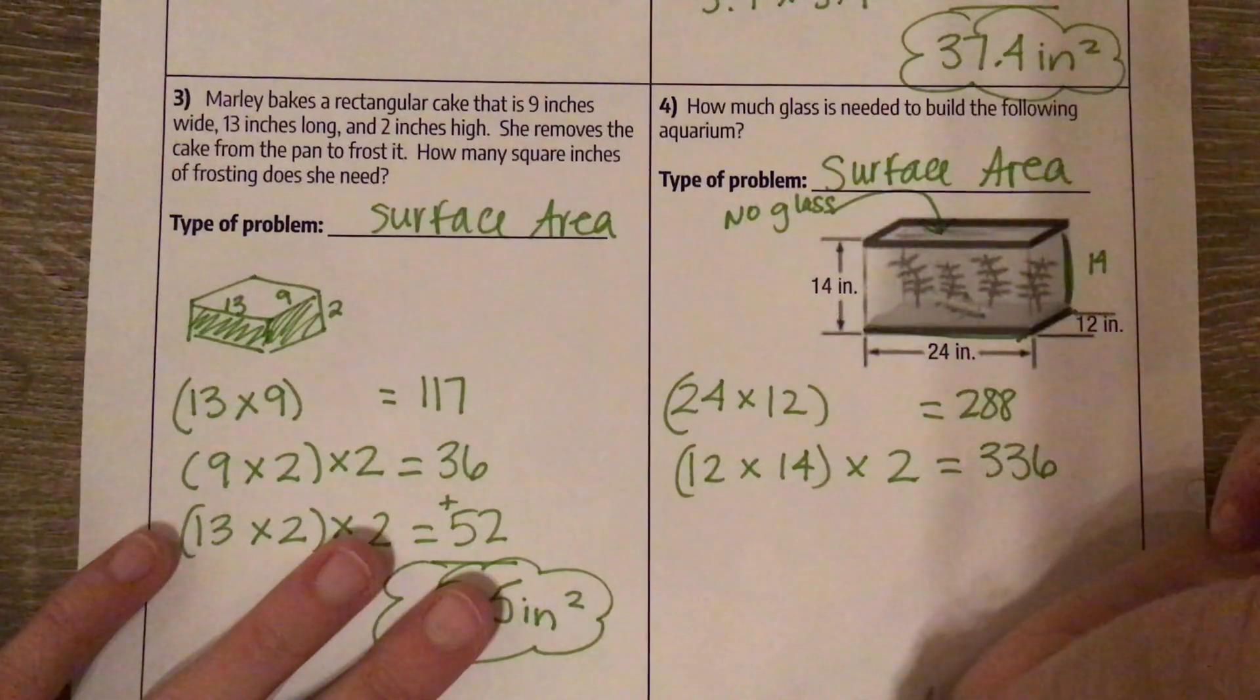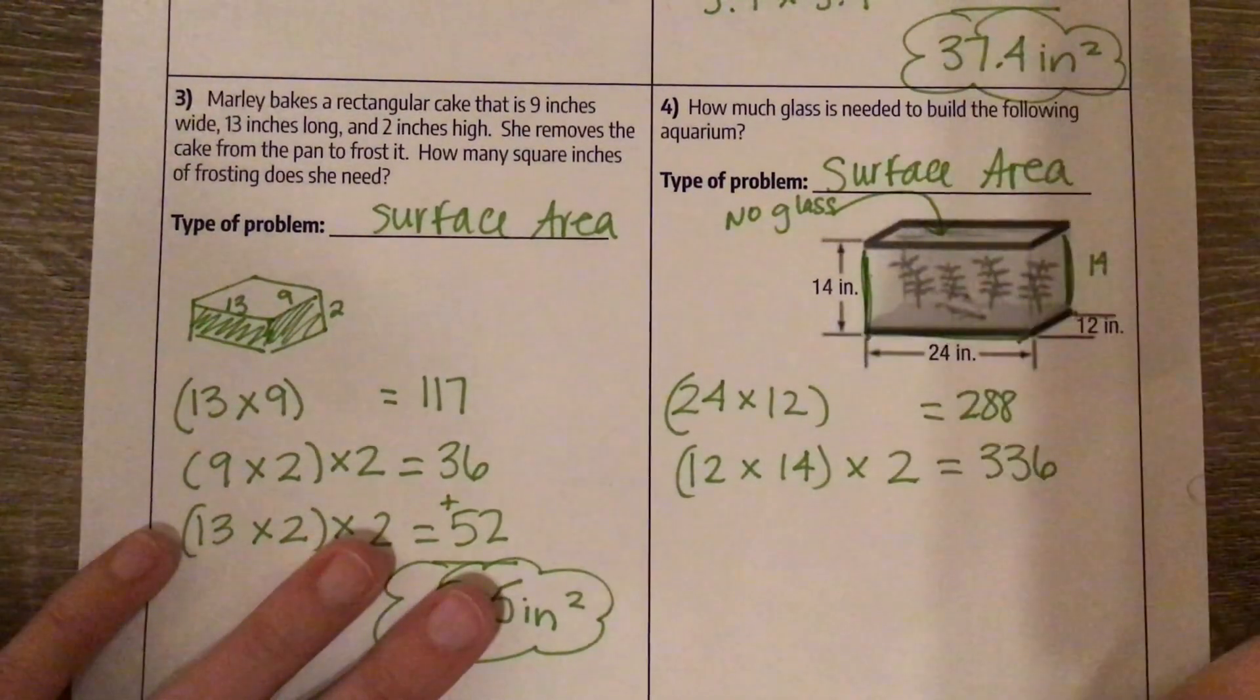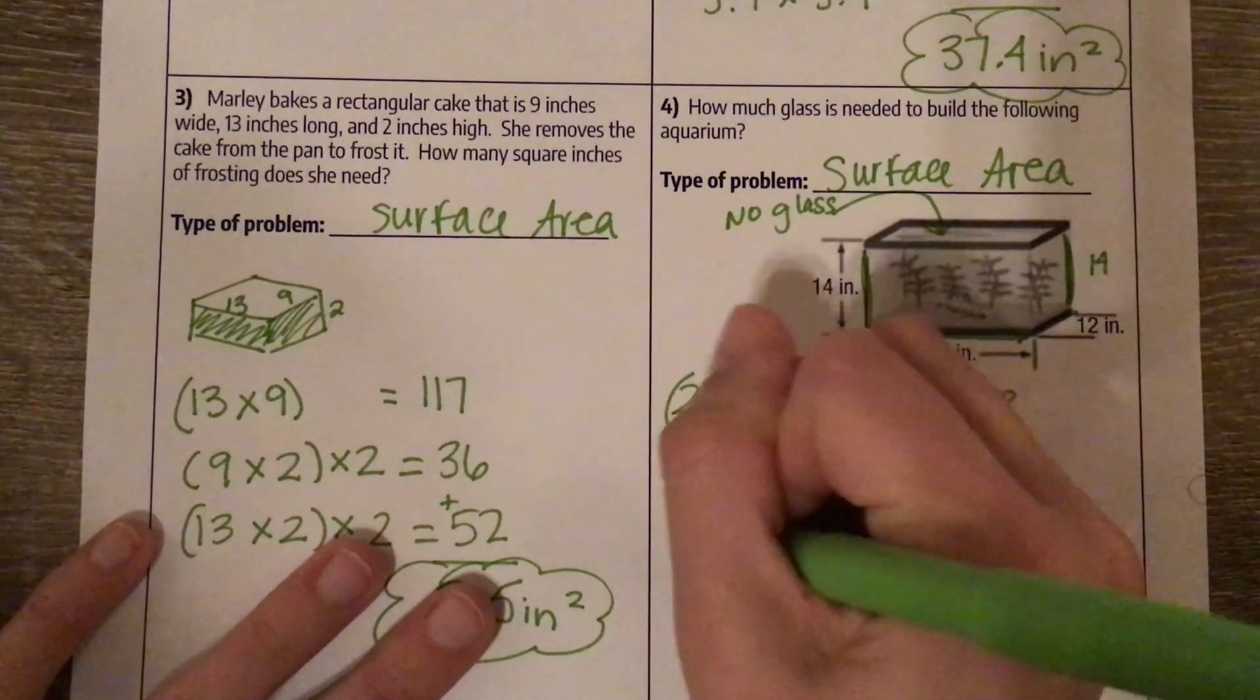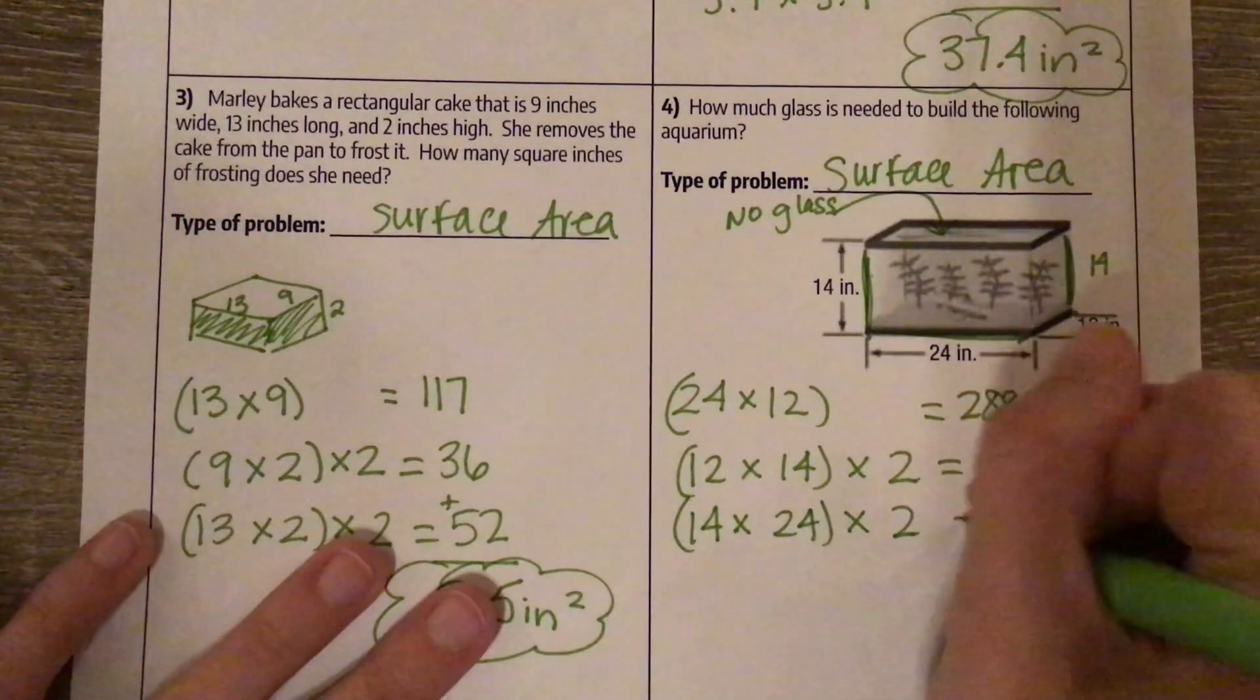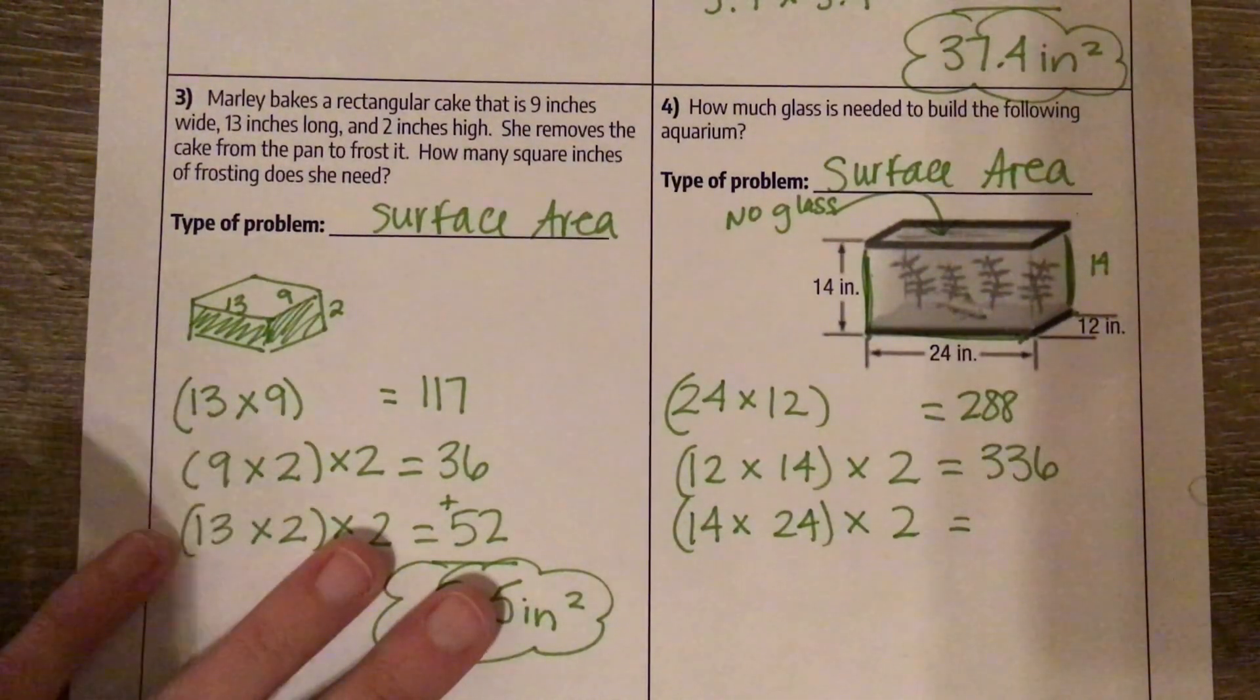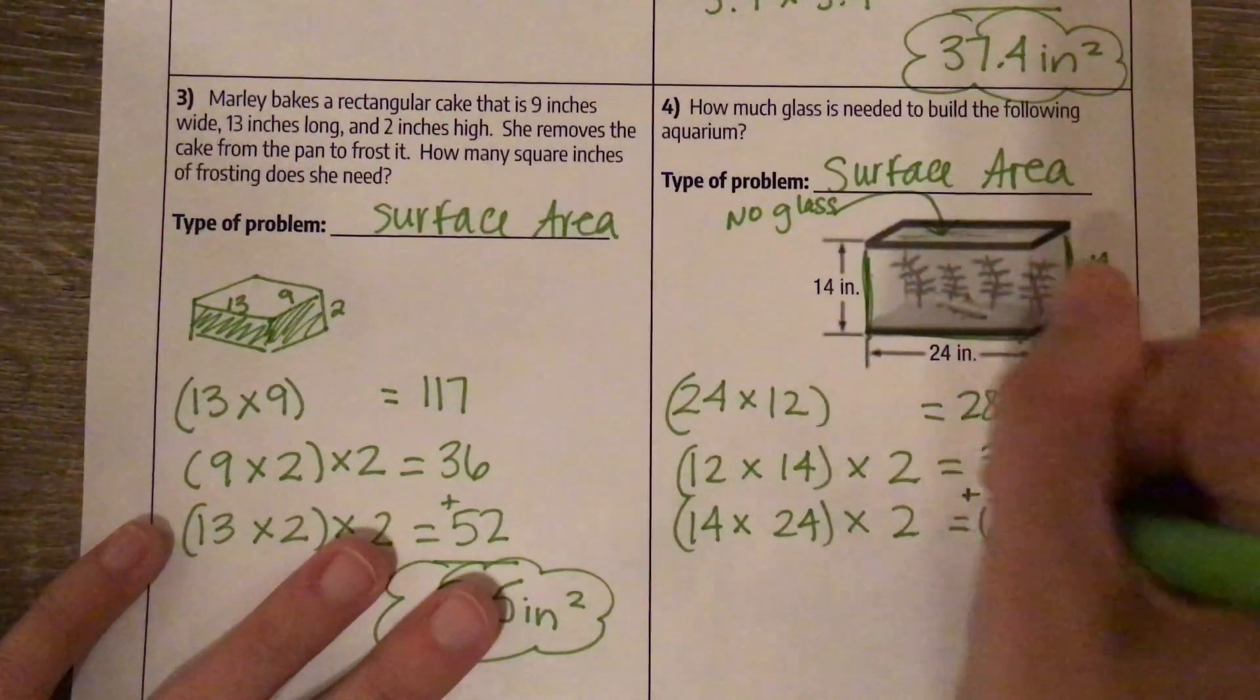And then the other side, this front here, we have 14 by 24. We have that in the back as well. So there's two of them, 14 by 24. We need to double that. Which is 672.